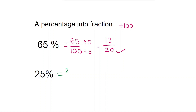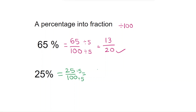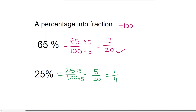Let's convert twenty-five percentage. Write it as twenty-five by hundred. Both are divisible by five — five times five is twenty-five, five times twenty is hundred — giving five by twenty. Again both are divisible by five — five times one is five, five times four is twenty — so one by four is the fraction.